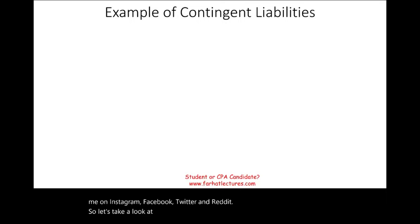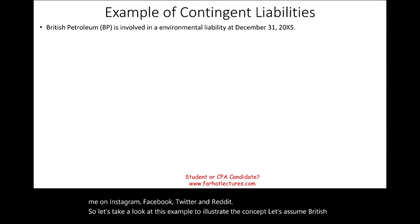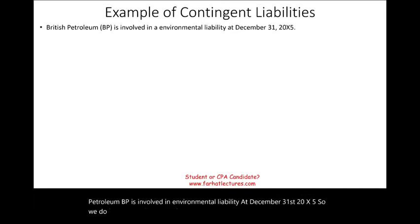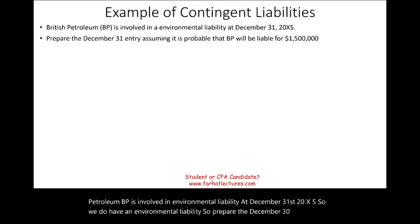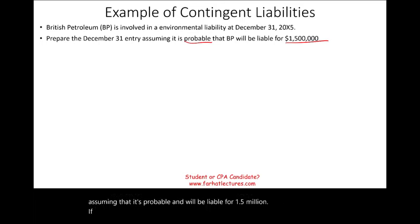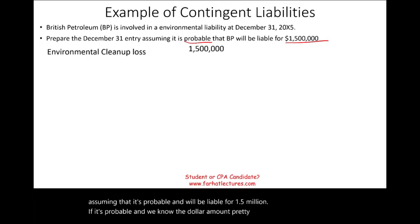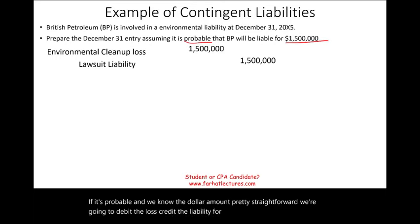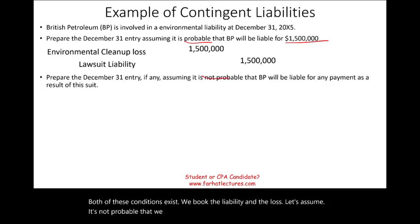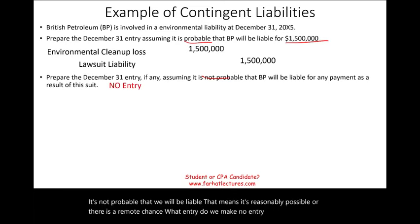Let's look at an example. Assume British Petroleum (BP) is involved in an environmental liability at December 31, 20X5. Prepare the December 31st entry assuming it's probable and BP will be liable for $1.5 million. Since it's probable and we know the dollar amount, it's straightforward: debit environmental cleanup loss $1.5 million, credit liability $1.5 million. If it's not probable — reasonably possible — no entry. If reasonably possible, disclose; if remote, do nothing. When in doubt, always disclose.